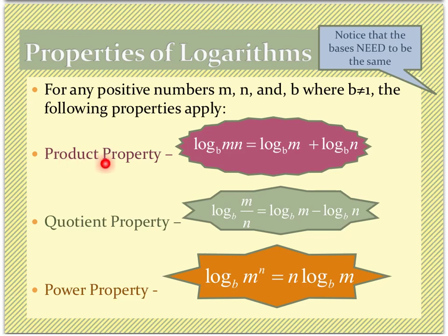The product property says that any time I have a log base B of some type of product M times N — and remember, this could be two numbers, two variables, or a variable and a number — we can split up that product with an addition sign. So we can change it from a product to a sum by splitting it into two different log expressions.